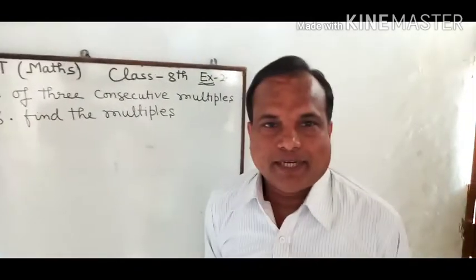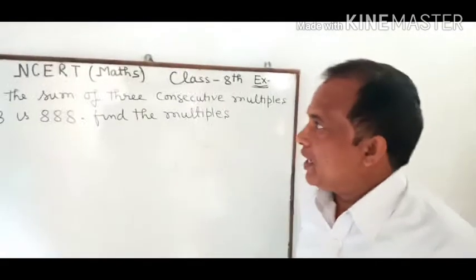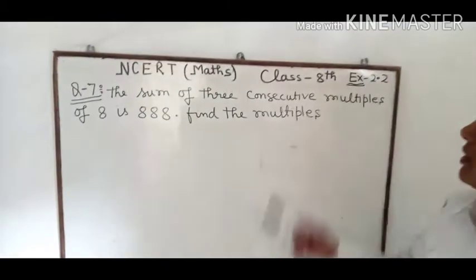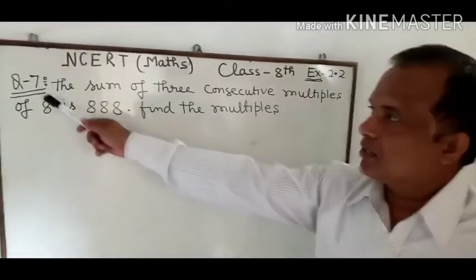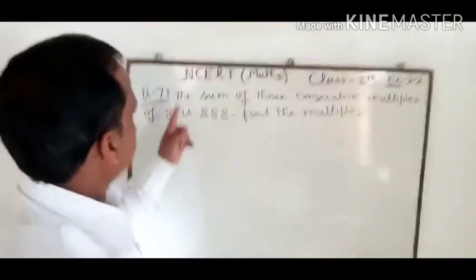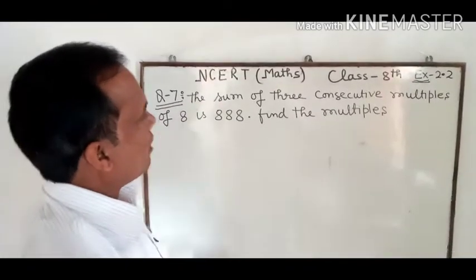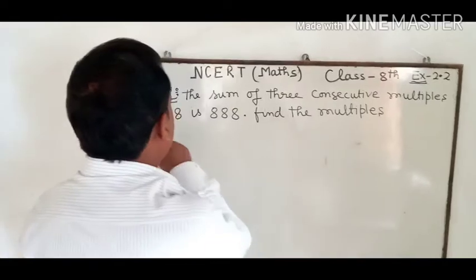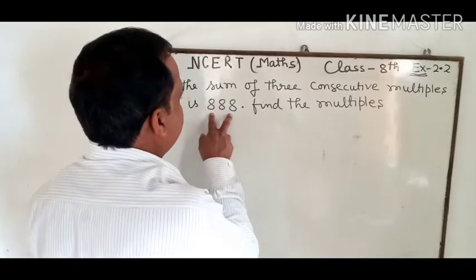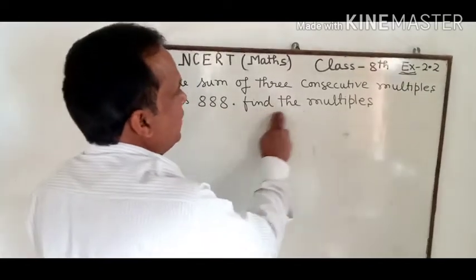Hi, good morning my dear students. Today I am going to discuss Exercise 2.2, Question Number 7. The question says the sum of three consecutive multiples of 8 is 888. Find the multiples.